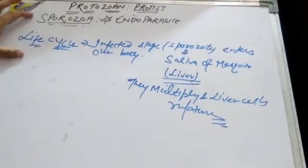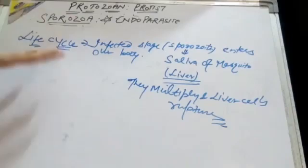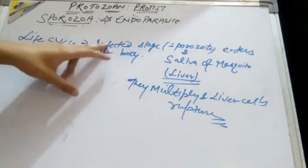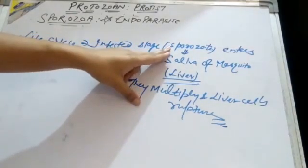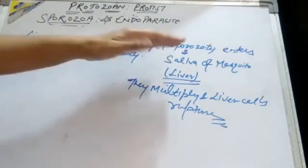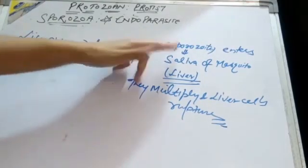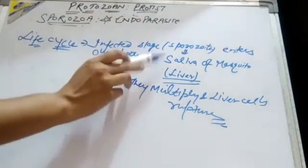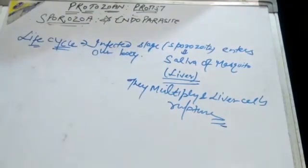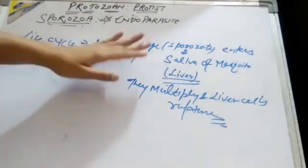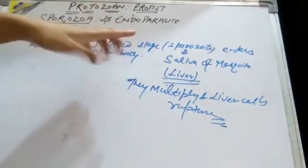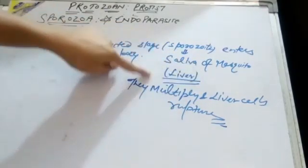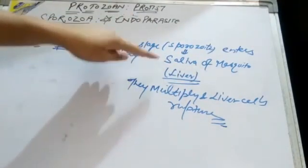Now let's look at the life cycle in detail. The infected stage is called sporozoite. Sporozoite enters our body through the saliva of the mosquito. After entering, the sporozoite first goes to the liver.